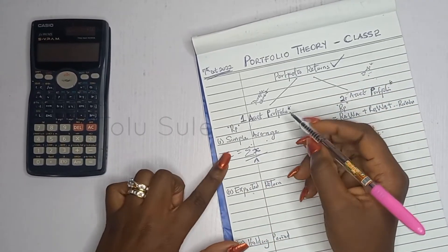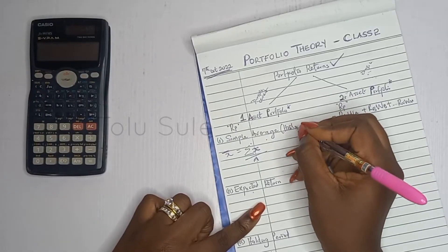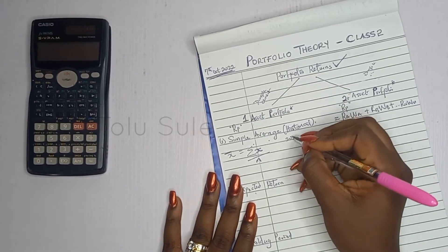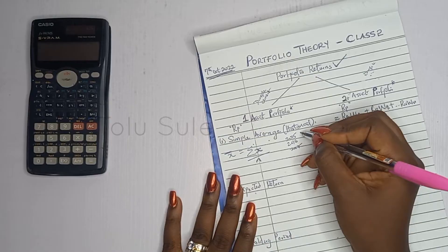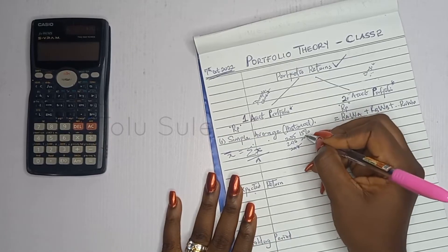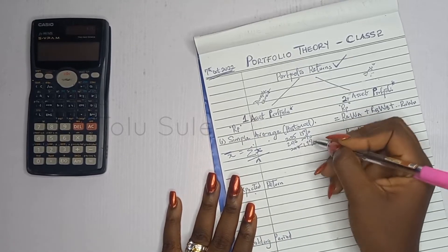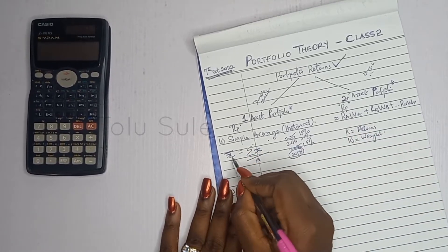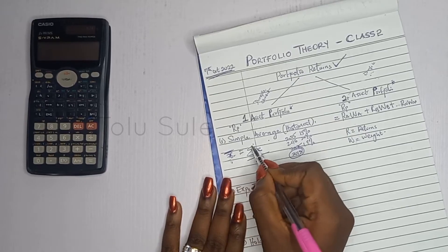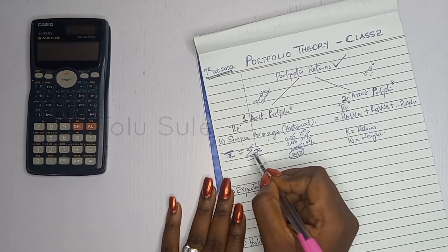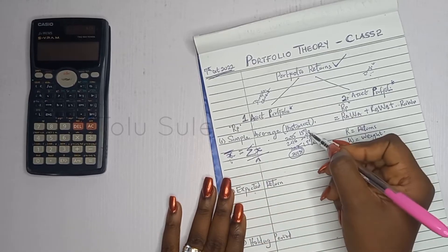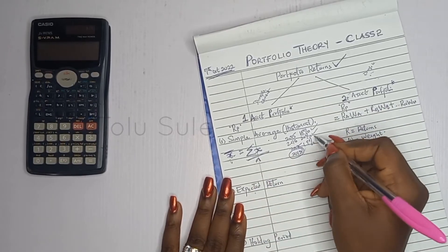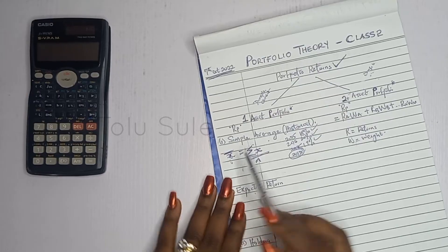This approach focuses on historical information. For example, a question might give you returns of 15% in 2015, 20% in 2016, and 19% in 2017, asking you to evaluate the portfolio return for 2018. You just do x-bar equals the sum of 15 plus 20 plus 19, divided by 3, which gives you the average.